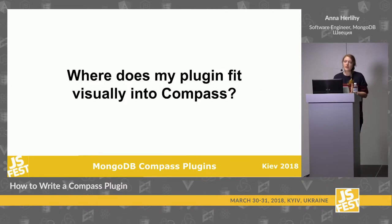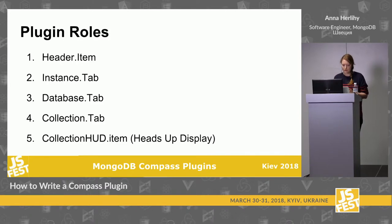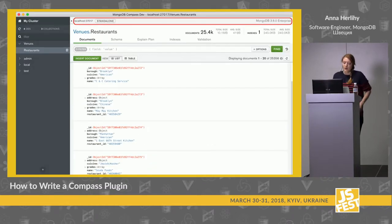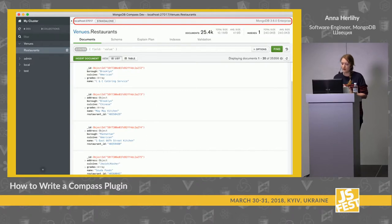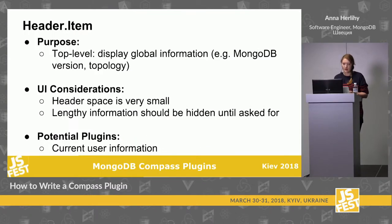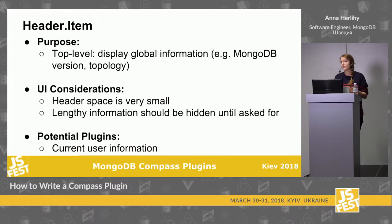Now I'm going to go through what options you have for plugging into Compass. There are five different roles — basically five different places your plugin can fill visually or in terms of data access. The first is the header item. This is where you'd put metadata like your server address, topology, and version. Things to consider: it's really small so you probably don't want anything interactive. It's also visible for the entire connection, so put information that's true for the entirety of your connection.